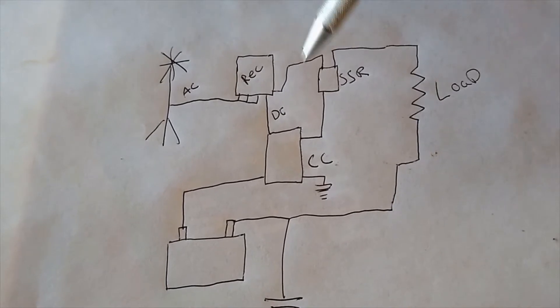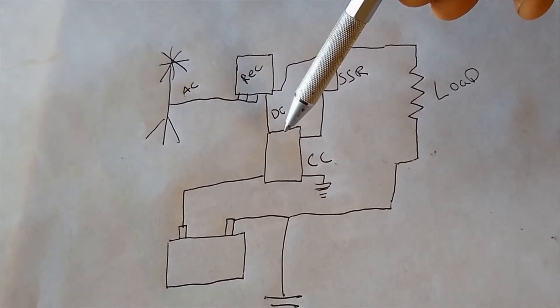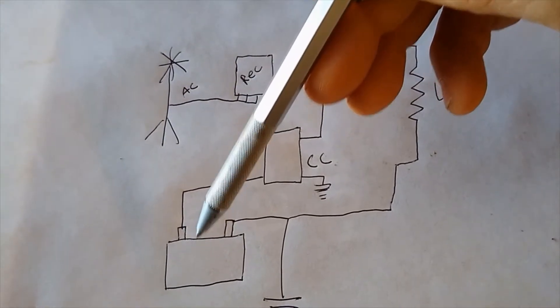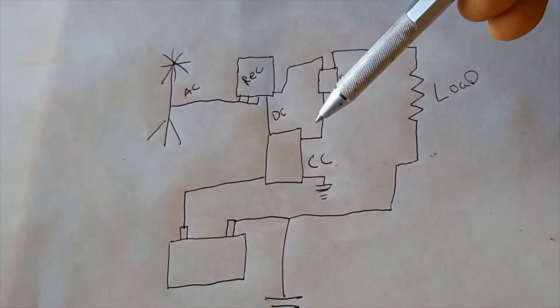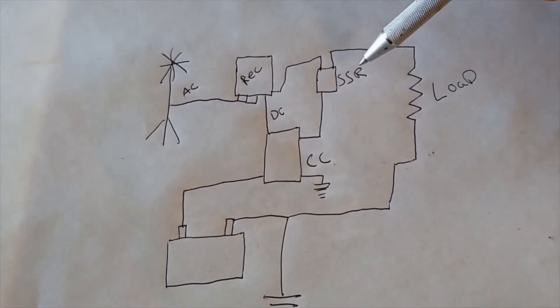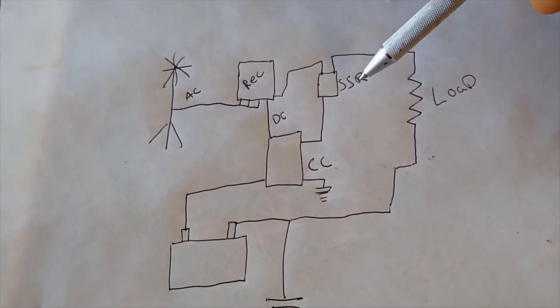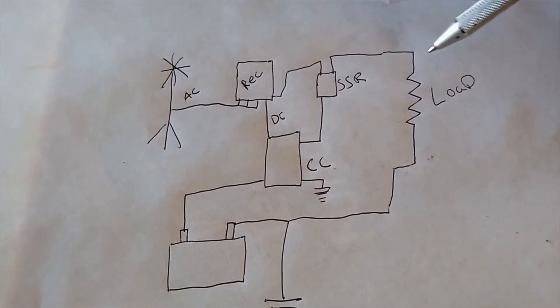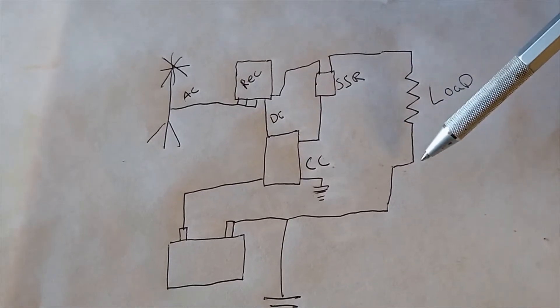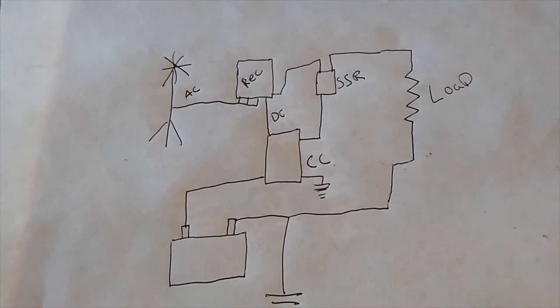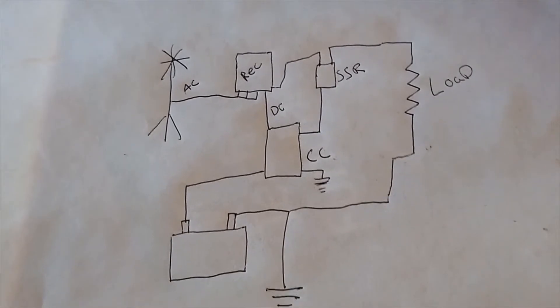So the power comes in through the rectifier and goes to the charge controller which sends it down to the battery to charge the battery. If it doesn't need the power, then it sends a signal to the solid-state relay so that it can divert that power around the charge controller and through the resistive load to ground, which is the diversion load.